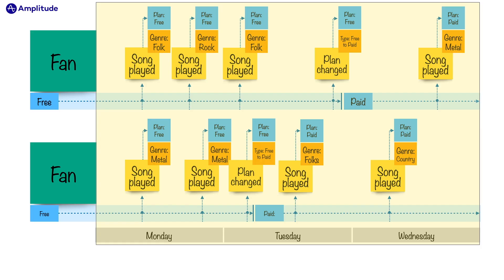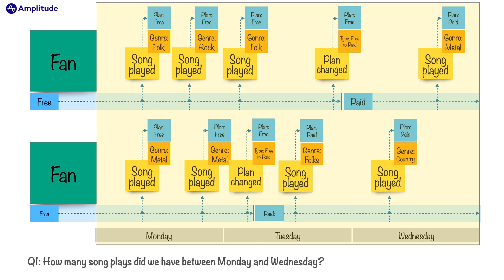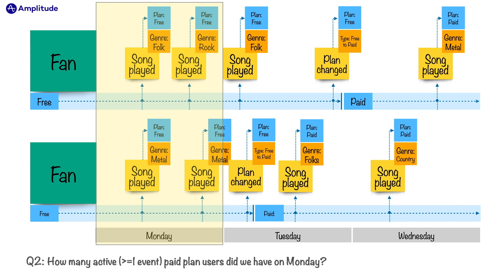Let's do a quick activity and knowledge check based on what we've watched so far. Question number one: how many song plays did we have between Monday and Wednesday? Our first fan had four song plays, our second fan had four song plays, so that would be eight. Question number two: how many active — which we define as having one or more events during the time period — paid plan users did we have on Monday? The answer here is zero. Looking at the events and user properties sent with those events, we don't have any plan paid on Monday; they are all plan frees.